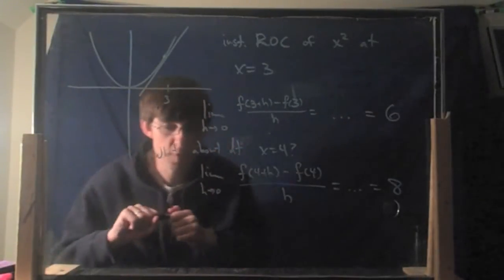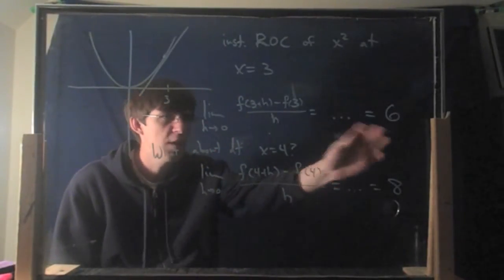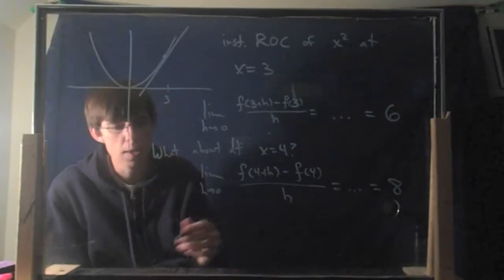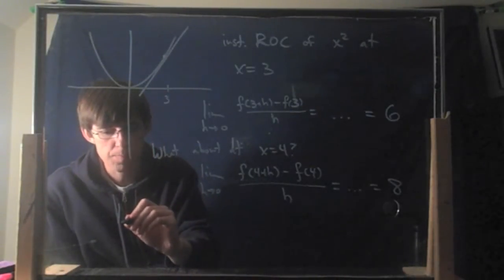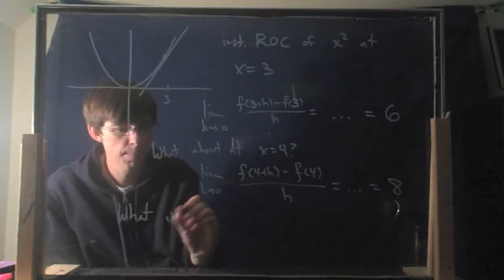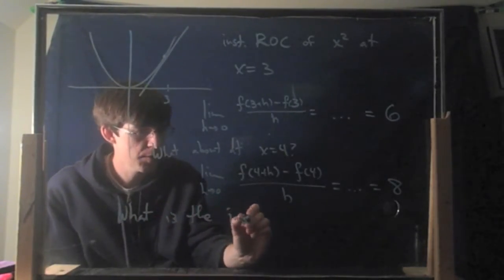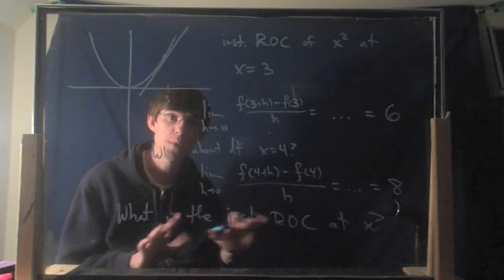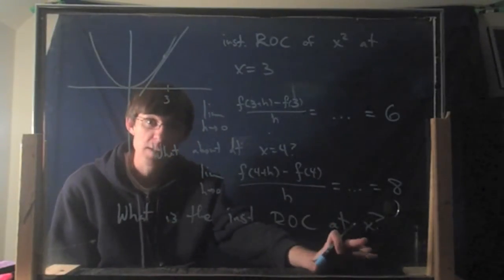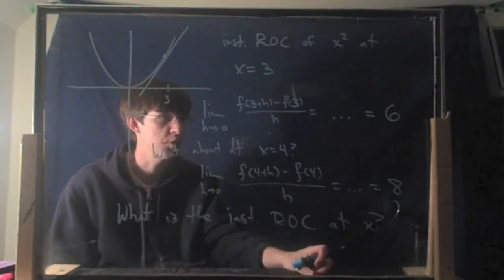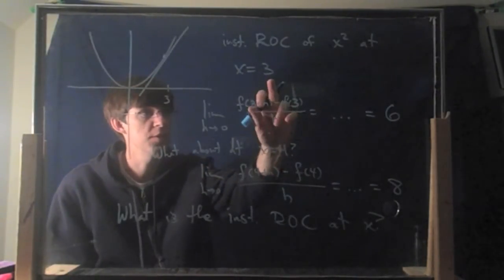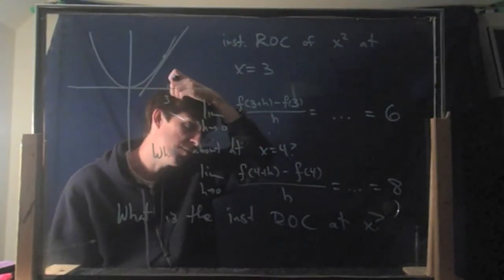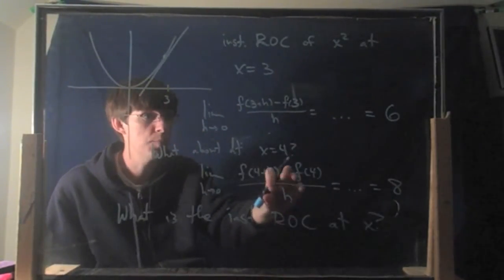What about other points? The holy grail question is: can you see the pattern here? When you use 3, you get 6. When you use 4, you get 8. That's just for this function, x². The big question is: what is the slope, or the instantaneous rate of change — they're the same — at x? If I don't tell you what x is, but I give you any x, can you tell me what the slope will be at that point? It turns out, for this function, you always get 2 times the point that you put in.